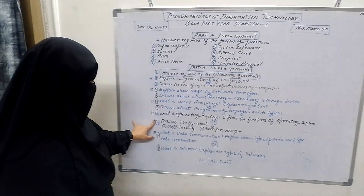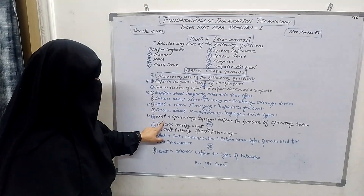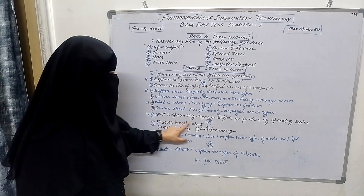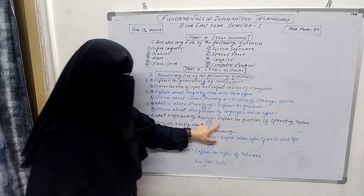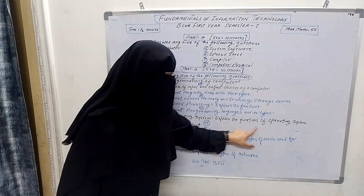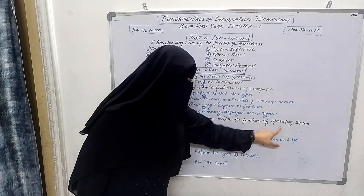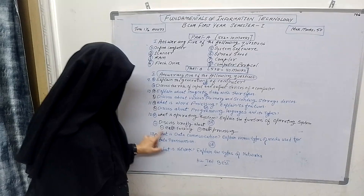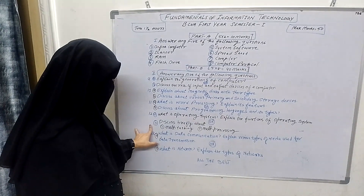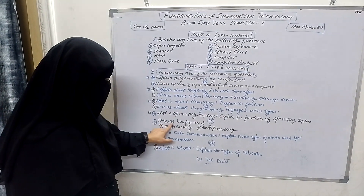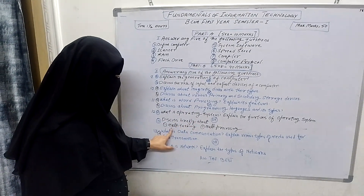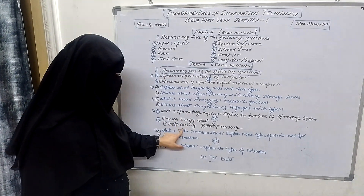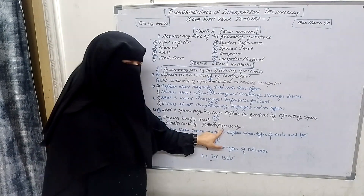Question number 12: A — What is an operating system? Explain the functions of an operating system. B — Discuss briefly about multitasking and multiprocessing.